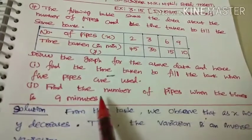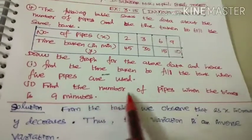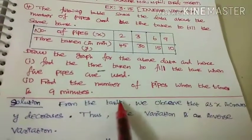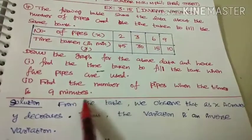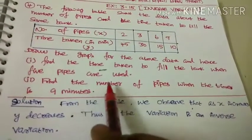The first sub-question is: find the number of pipes when the time taken to fill the tank is nine minutes.